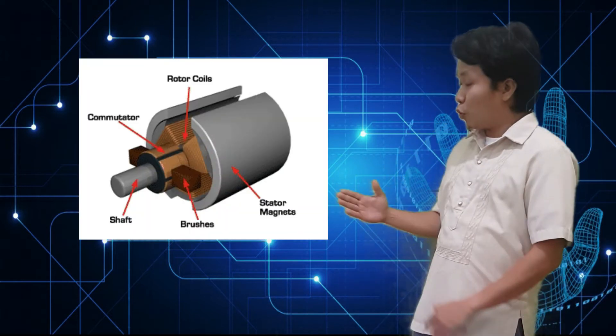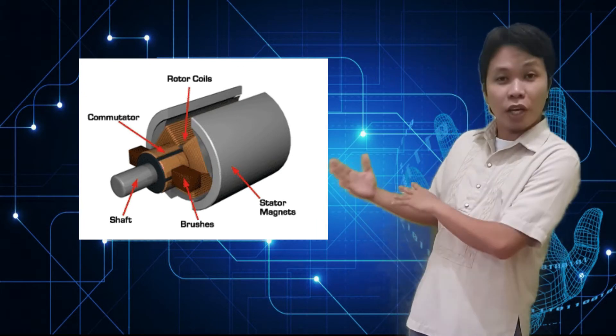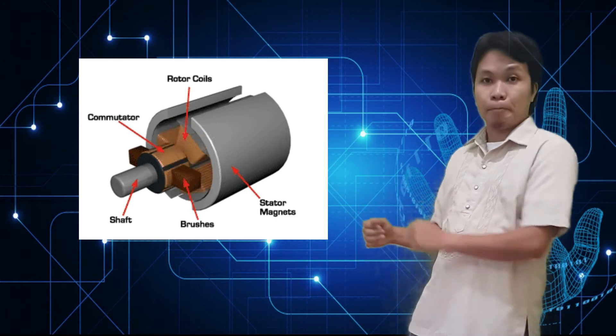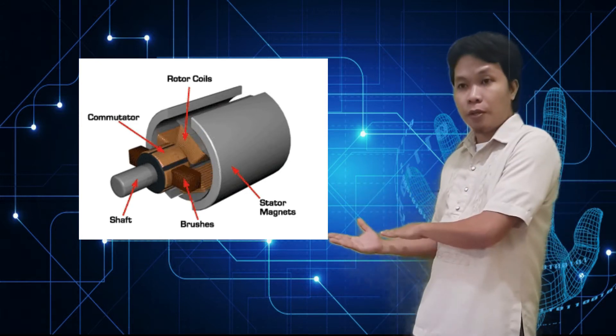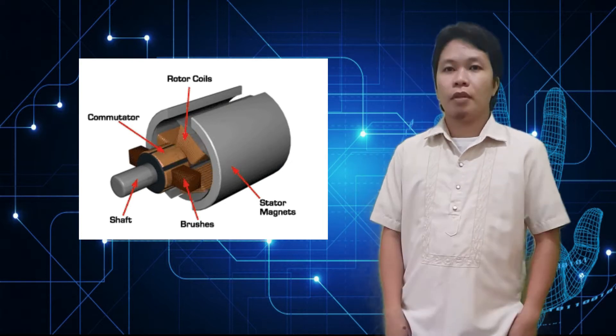So now, let us look closely at the parts of the electric motor. We have here a magnet, a loop of copper wire or a rotor coil, we have a commutator, a brush, and a shaft. So those are the basic parts of a simple electric motor.